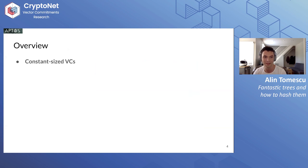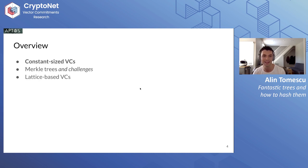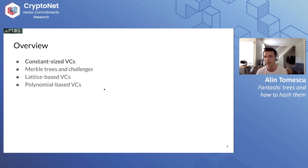We're going to start by dismissing VCs with constant-size proofs, as amazing as they are. Then we're going to talk about local trees and dismiss them too, because they have some problems. And then we're going to talk about three or four constructions: lattice-based constructions, polynomial-based constructions, and vertical trees, which Chris briefly touched upon.